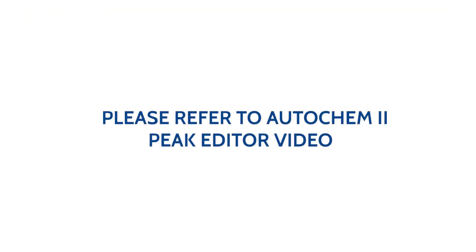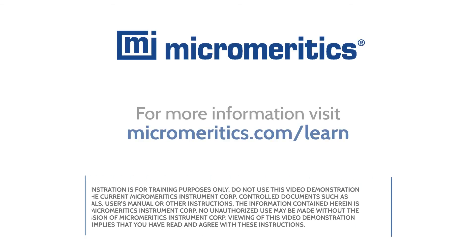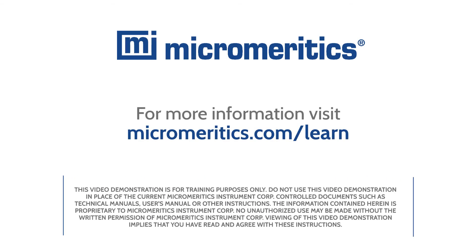Please refer to our AutoChem 2 How to Use the Peak Editor video demonstration for more information. And that completes this demonstration on how to run a pulse chemisorption with platinum alumina reference material on the MicroMeritics AutoChem 2 Automated Catalyst Characterization System. For more information, visit micromeritics.com/learn.